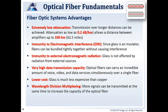There's immunity to external electromagnetic radiation — glass is not affected by radiation from external sources, and lightning doesn't affect it. It has a very high data rate and data transmission capacity. Optical fibers can carry an incredible amount of voice, video, and data services simultaneously over a single fiber. It's lower cost — glass is less expensive than copper. And we have wavelength division multiplexing, as discussed in Chapter 2 — more signals can be transmitted at the same time to increase the capacity of an optical fiber.